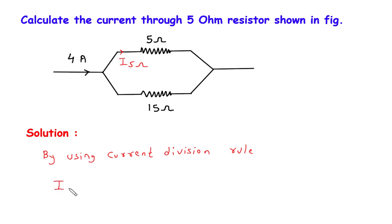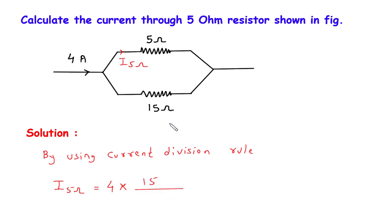So according to the current division rule, I5 ohm will be equal to the total current — that is 4 ampere — multiplied by the opposite branch resistance. Here we can see the opposite branch resistance to this 5 ohm is 15 ohm, so it will be 15 divided by 5 plus 15. This is the current division rule formula.